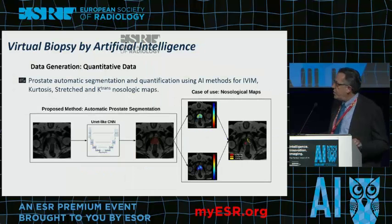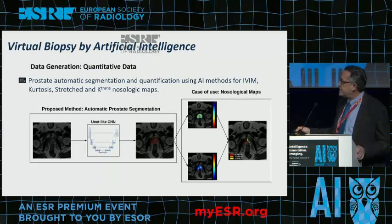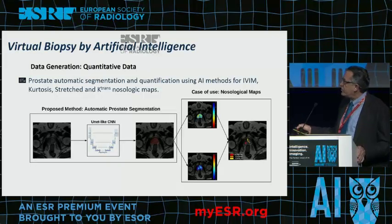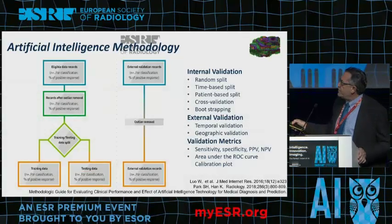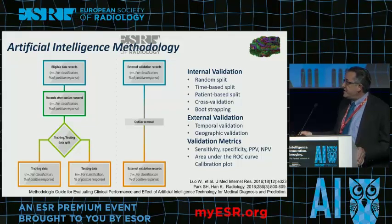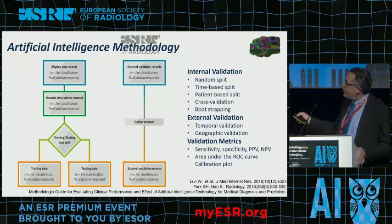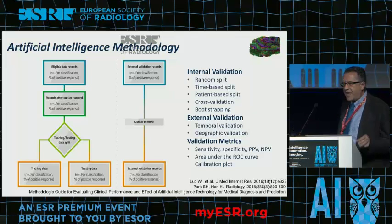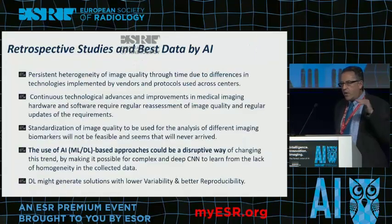Here is an example of a virtual biopsy of the prostate. We use a neural network to segment the tumor and calculate parameters in prospective data. We define exclusion criteria, then have training data, testing data for fine-tuning, and then external validation, which is mandatory. For both internal and external validation, many different methods and metrics must be used to achieve high-quality results.